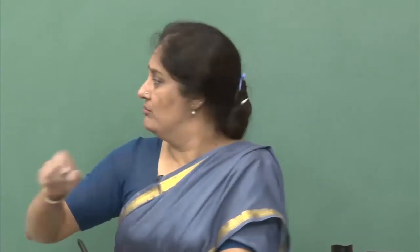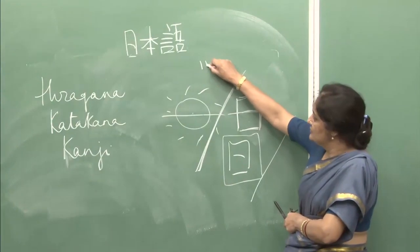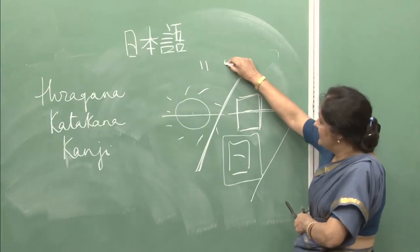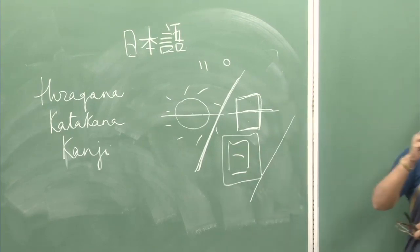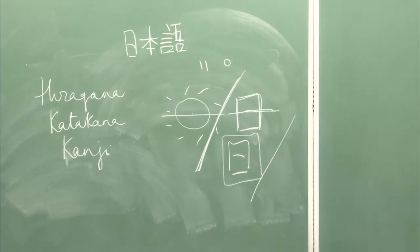There is a second set also of both the scripts. For both scripts, the second set has 25 characters each. The interesting part is that the second set is made from the first set by using just two symbols — these two symbols are used and another second set of 25 symbols is made.